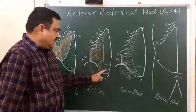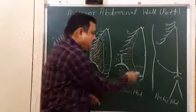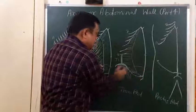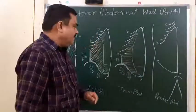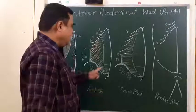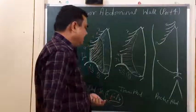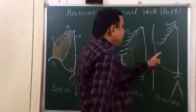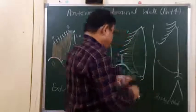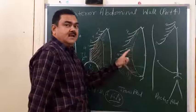The aponeuroses of the internal oblique and transversus abdominis join together to form the conjoint tendon, also known as the falx inguinalis. Another muscle is the rectus abdominis. Its nerve supply is T7 to T12 and L1.